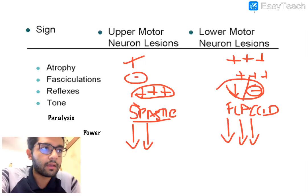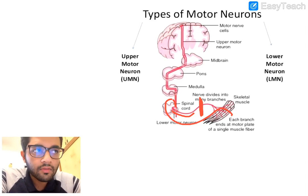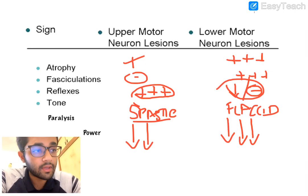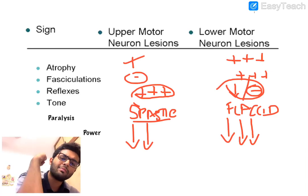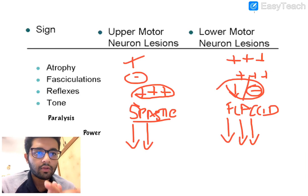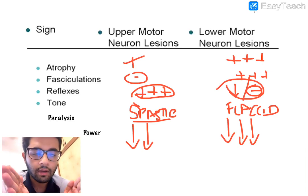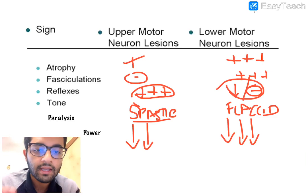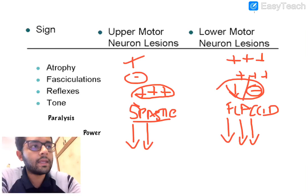In LMN palsy, when a reflex is stimulated the arc starts but cannot go forward because there is no neuron connecting to the muscle, so reflexes are absent. The features are: weakness, flaccidity, hypotonia, and quicker atrophy — because of disuse and no stimulation at all. In UMN there is at least some firing so atrophy is slower; in LMN atrophy is faster and worse.